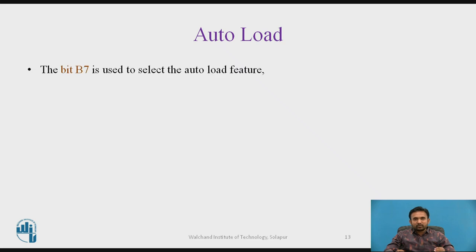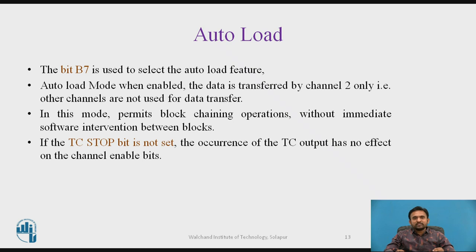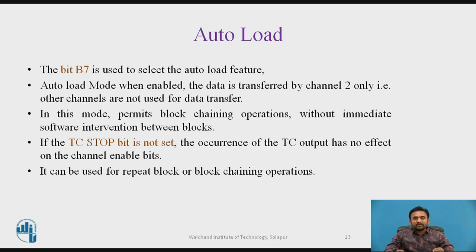The next bit is auto reload, bit B7, which is used to select the auto load feature. In auto load mode, when enabled, data is transferred by channel 2 only — the other channels are not used for data transfer. This mode permits block chaining operation without immediate software intervention between blocks. If the TC stop bit is not set, the occurrence of the TC output has no effect on the channel enable bits, and it can be used for repeat block or block chaining operations.